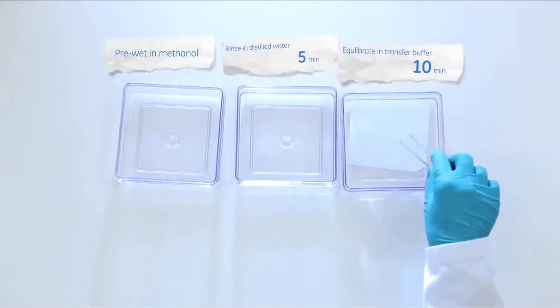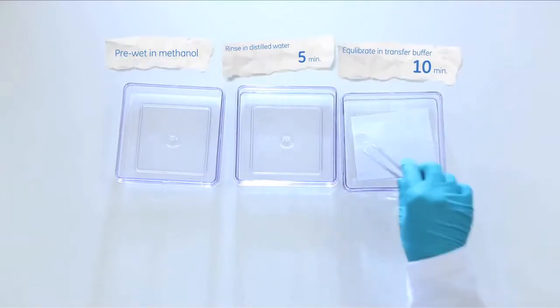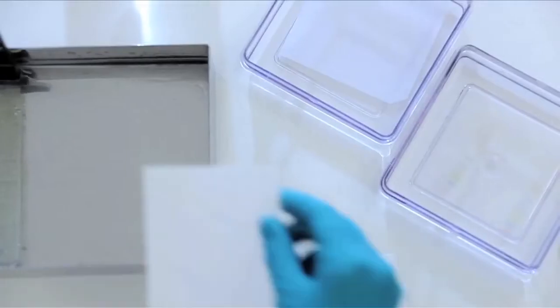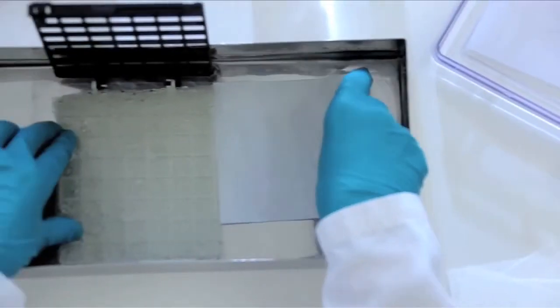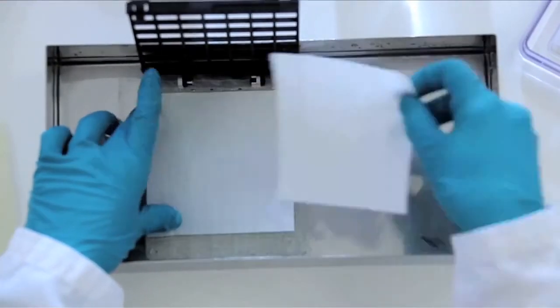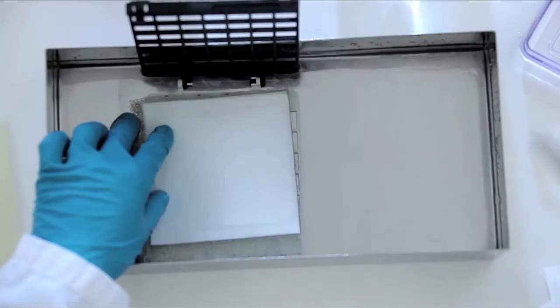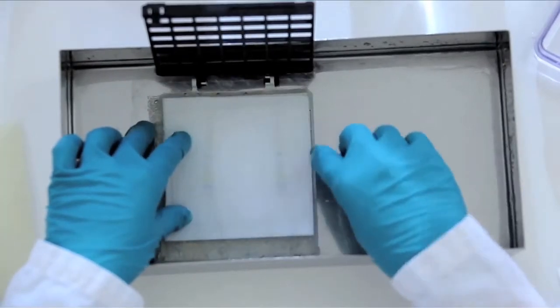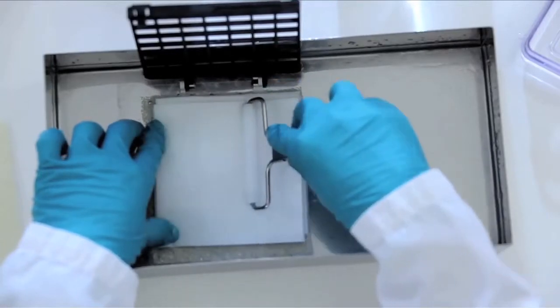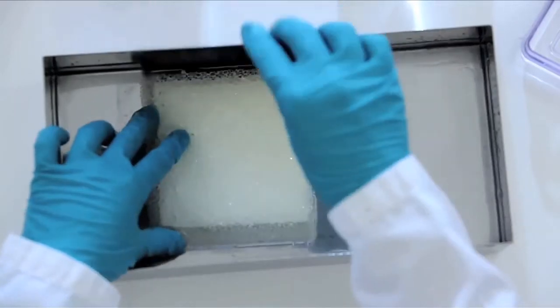Always use a blotting membrane of the same size and shape as the gel and the correct size for the frame. Build the sandwich carefully using two papers pre-wetted in transfer buffer on each side of the gel and membrane. It is important to remove all air bubbles from the sandwich. Carefully use a roller or a cut-down pipette or glass rod to squeeze them out.